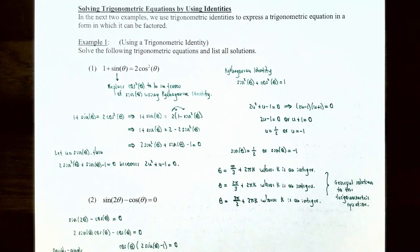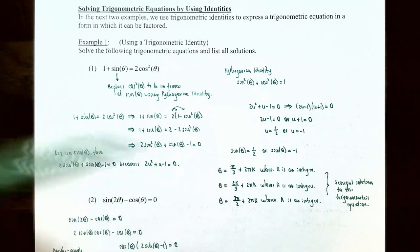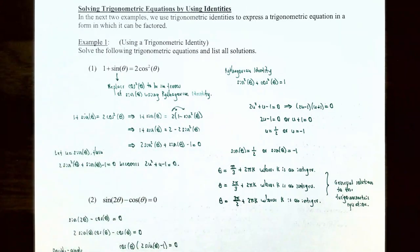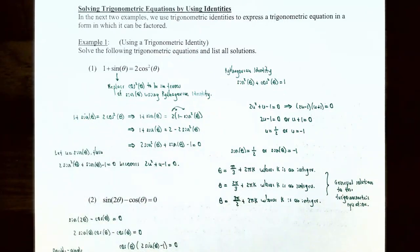Sine of theta equals one-half in quadrants 1 and 2. The quadrant 1 angle is pi over 3, so theta equals pi over 3 plus 2pi·k. The quadrant 2 angle is 2pi over 3, so theta equals 2pi over 3 plus 2pi·k. When sine of theta equals negative one, that's the angle 3pi over 2, so theta equals 3pi over 2 plus 2pi·k. Any of these three forms is the general solution to 1 plus sine theta equals 2 cosine squared theta.